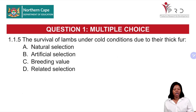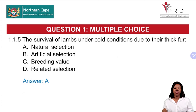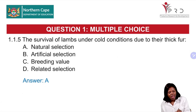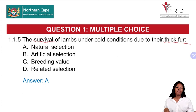Question 1.1.5: The survival of lambs under cold conditions due to their thick fleece. The correct answer is A — natural selection. Natural selection is a process in which animals with desirable or favorable traits are more likely to survive and reproduce. Because the lambs had thick fleece, they were able to survive — that is natural selection, and it does not involve human intervention.